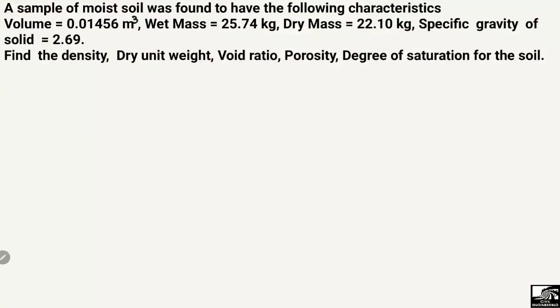Hello guys, welcome back to the Civil Engineering YouTube channel. Please subscribe to our channel for daily civil engineering videos. Today's lecture, we are going to find out the unknown parameters for a soil sample. It is a problem related to soil mechanics. The problem states that a sample of moist soil was found to have the following characteristics: the volume of the soil sample is 0.01456 cubic meters, the mass of the soil sample is 25.74 kilograms, the dry mass is 22.10 kilograms, and the specific gravity is 2.69. We have to find out the density, dry unit weight, void ratio, porosity, and degree of saturation.